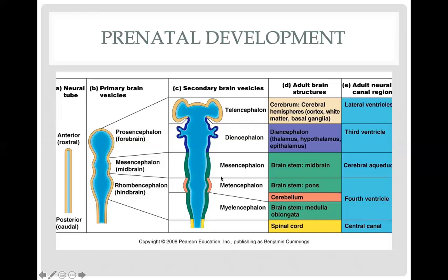The mesencephalon from the primary brain vesicle continues as the mesencephalon and becomes the midbrain in the adult brain. The rhombencephalon, the most caudal aspect of the brain, forms two parts: the metencephalon and myelencephalon. The metencephalon develops into the pons portion of the brain stem and the cerebellum. The myelencephalon eventually forms the medulla oblongata, and as we already know, the medulla oblongata continues to become your spinal cord.